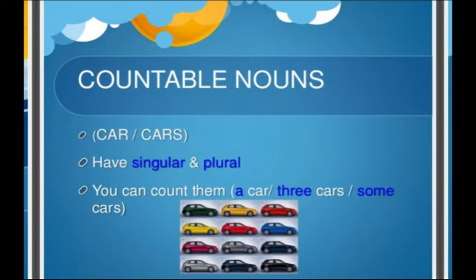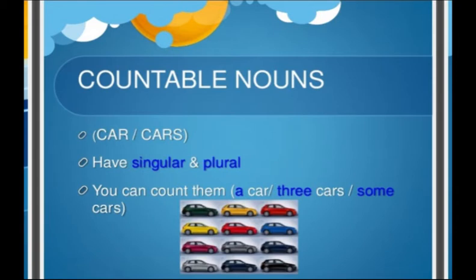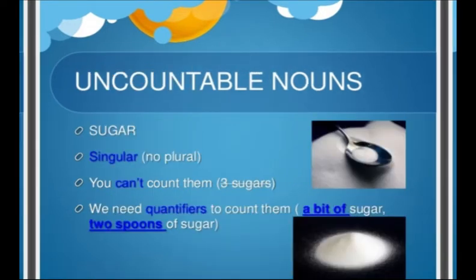Before further discussion, you have to understand what countable nouns and uncountable nouns are. Nouns that can be counted are called countable nouns. For example: car, cards. In countable nouns, both singular and plural forms exist. You can count them — for example: a car, three cars, some cars.